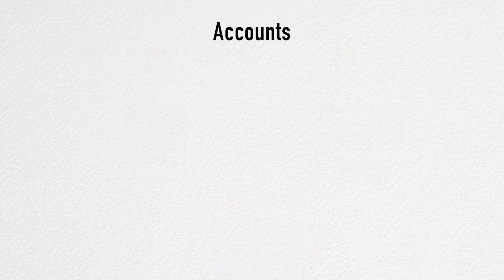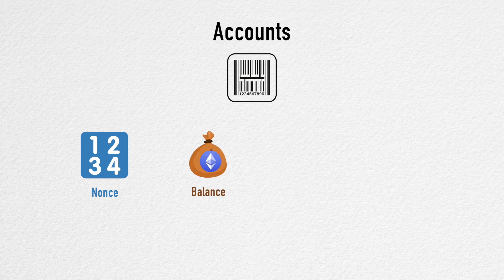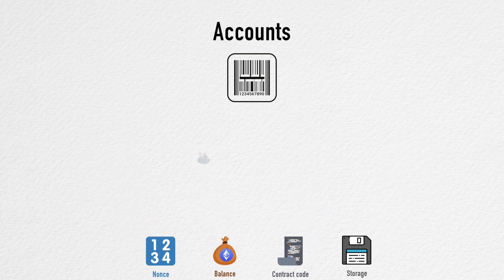Each account on Ethereum has a unique 20-byte address and contains four pieces of information: a nonce, which is a counter to prevent the same transaction from being processed more than once; the current Ether balance; smart contract code, if present; and account storage, which is empty by default. The first two are common across almost all blockchains, and the last two are related to smart contracts. In general, there are two types of accounts: externally owned accounts, controlled by private keys — like accounts for humans — and smart contract accounts, controlled by their contract code, which you can think of as bot accounts.